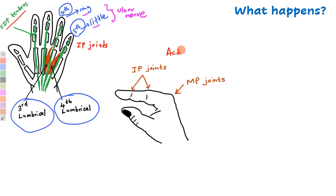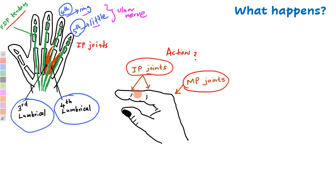What are the actions of the lumbricals? The lumbricals flex the metacarpophalangeal joints and extend the interphalangeal joints of the fingers. So the third and fourth lumbricals flex the metacarpophalangeal joint and extend the interphalangeal joints of the ring finger and little finger.